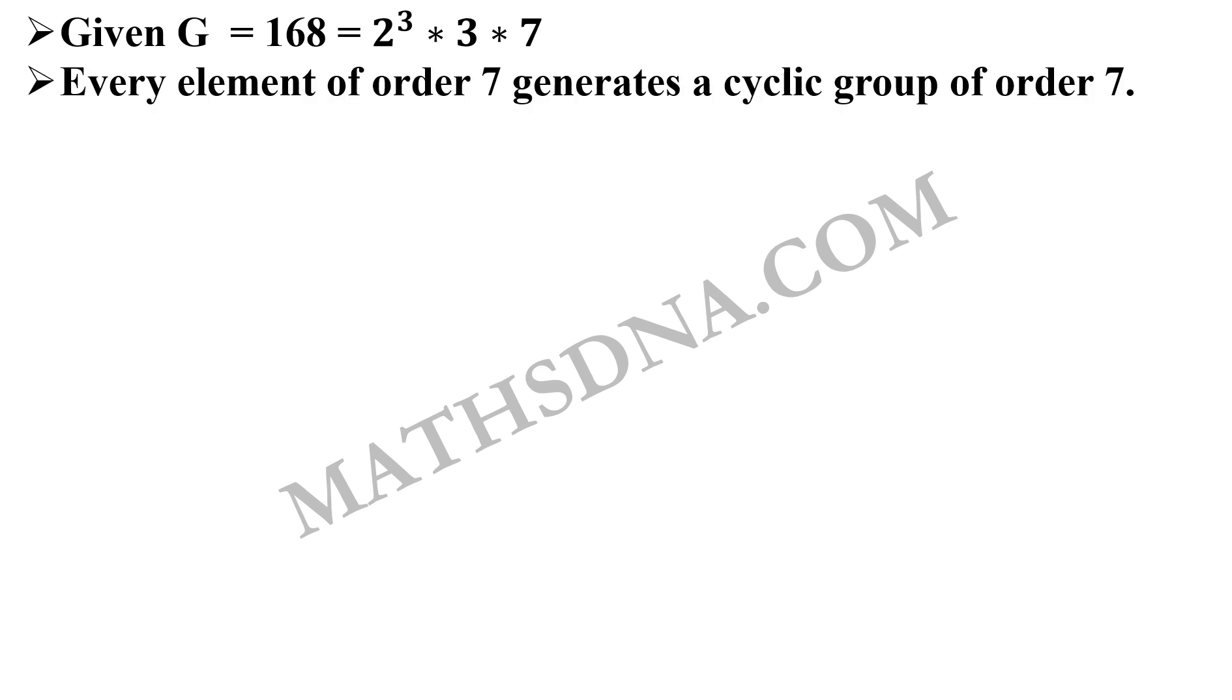Every element of order 7 generates a cyclic group of order 7. Why? Because 7 is a prime number. So definitely there will be a cyclic group. And thus we have to find total number of subgroups generated by these elements.